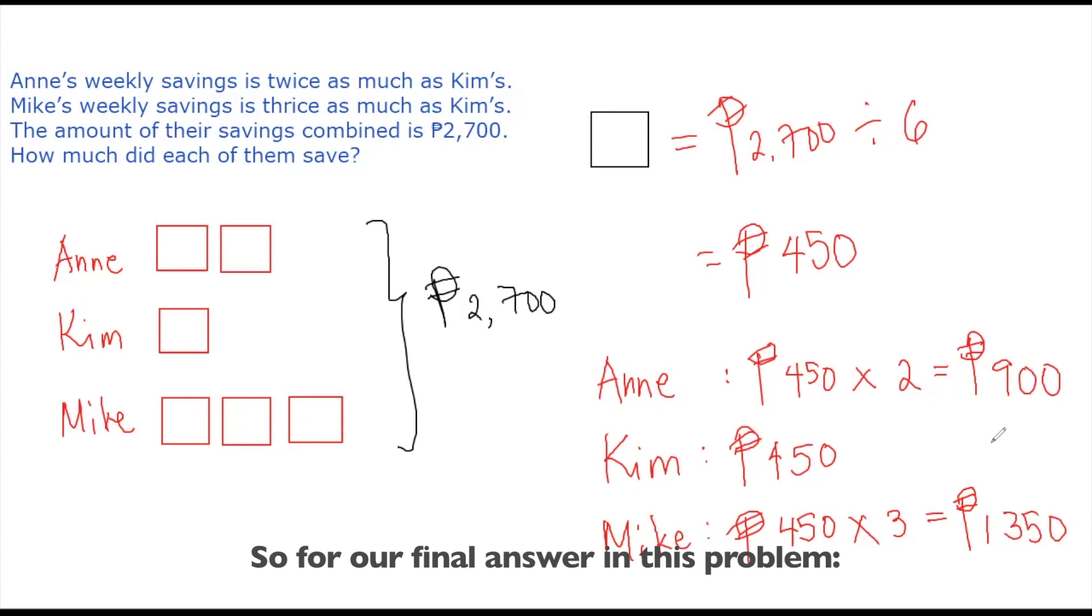So for our final answer in this problem, Ann's savings is 900 pesos, Kim's is 450 pesos, and then for Mike, it's 1,350 pesos.